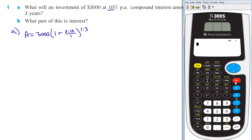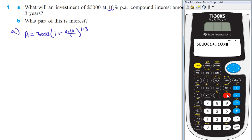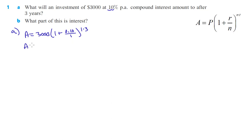We're just going to calculate that out and put this into the calculator just like it looks: 3,000 times, parentheses, 1 plus 0.10. And if we're dividing by 1, that's not going to change anything, so we'll just close the parentheses, and then 1 times 3 is 3 — it's to the third power, not the 33rd power. That would give us a different answer. And we get $3,993. So the A is $3,993.